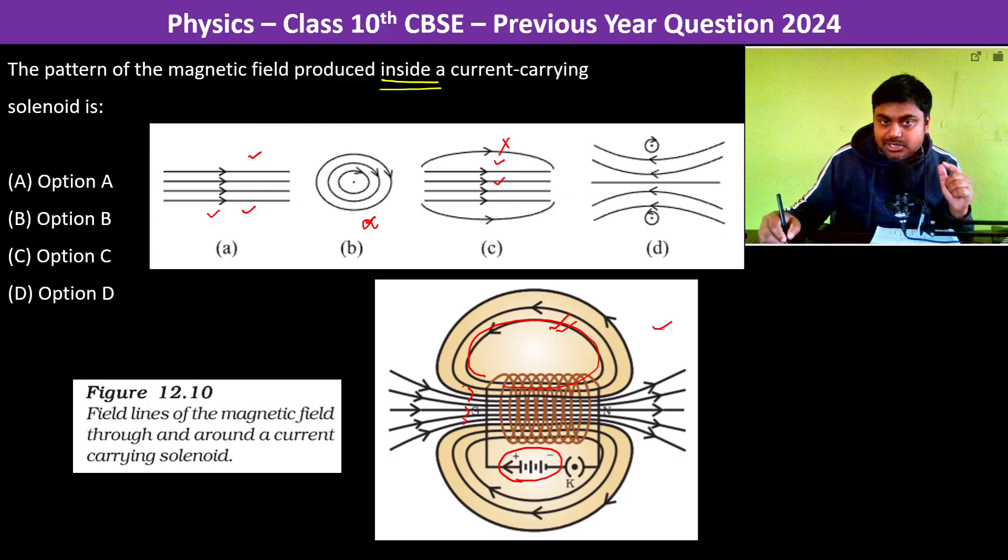Again, this will also be rejected, this is also rejected, and here if you see these small loops are formed, this is also wrong.